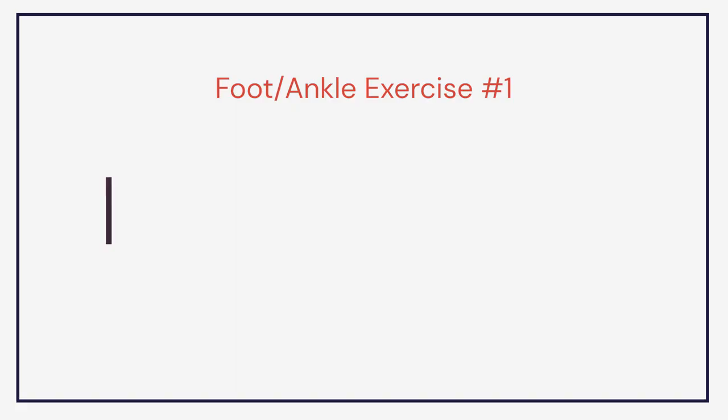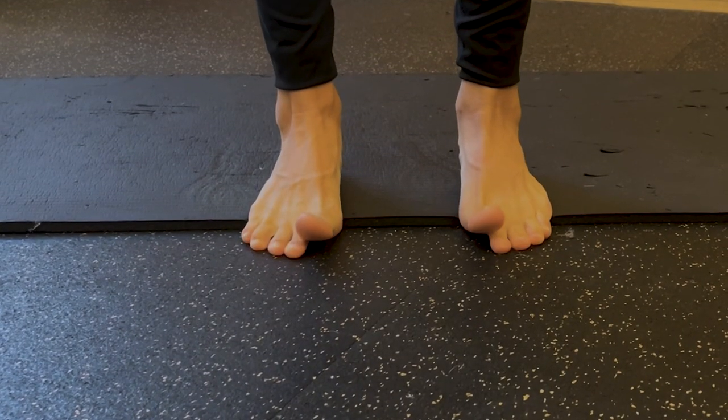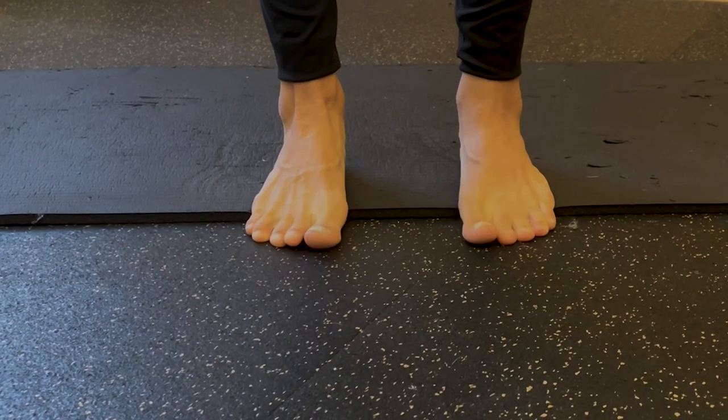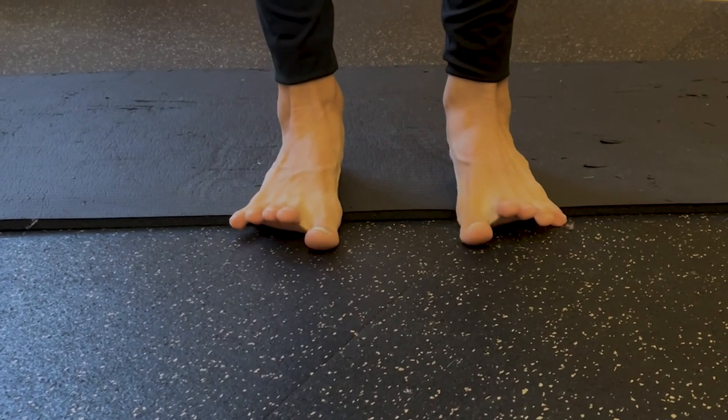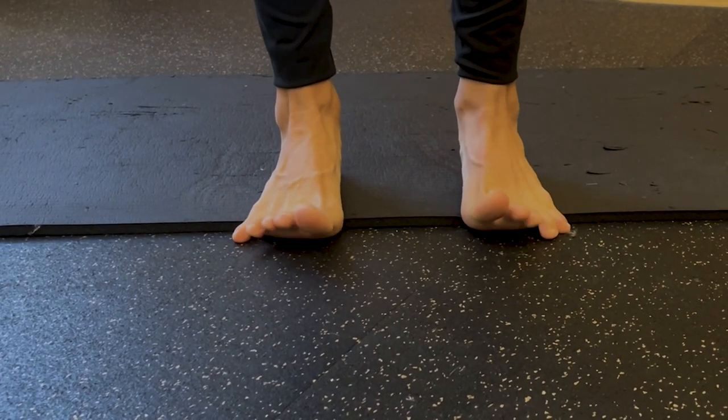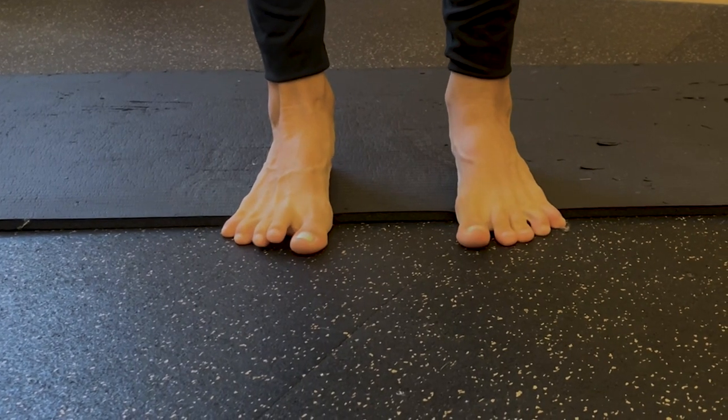The first focus is the intrinsic foot muscles. We have four layers of muscles in the feet, and a lot of people don't realize we need to strengthen them. The first exercise is toe yoga — feet flat on the floor, lift just the big toe and hold for three seconds, then lower and lift all the little toes and hold.